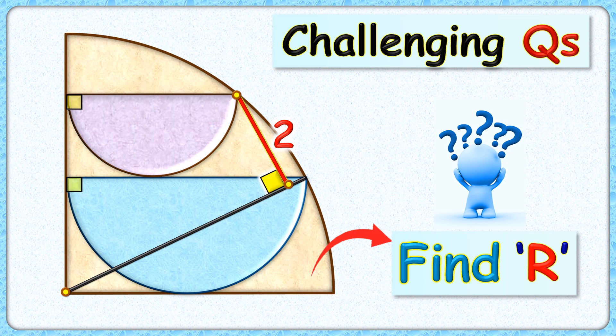This interesting question is from Math Olympiad and I must say a tough one. Here given to us is a quadrant and two semicircles. The center of the quadrant and the vertex of the semicircle is joined, and a perpendicular is drawn from another vertex to this line. This red line segment is given as 2 cm. With this limited data we have to find the radius of this quadrant.